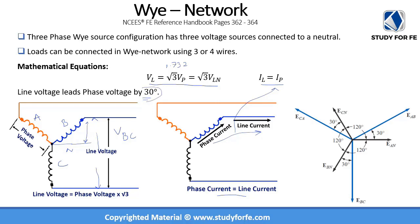If you ignore the fact that the line voltage leads the phase voltage by 30 degrees and try to solve a question, you will actually get a wrong answer — and chances are that wrong answer will be one of the options presented. So do not overlook this.